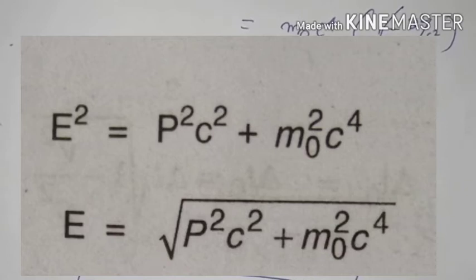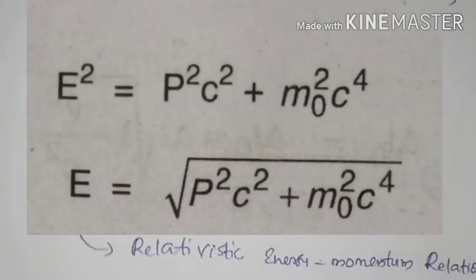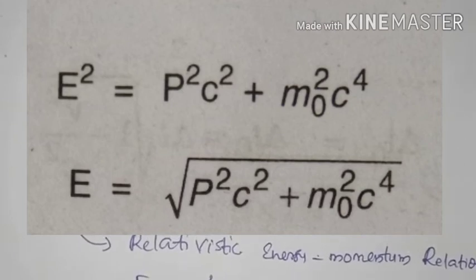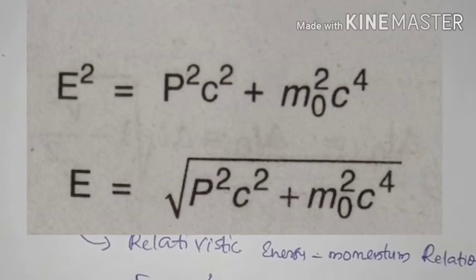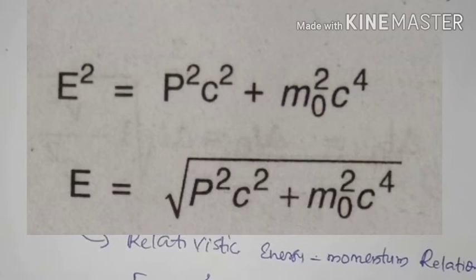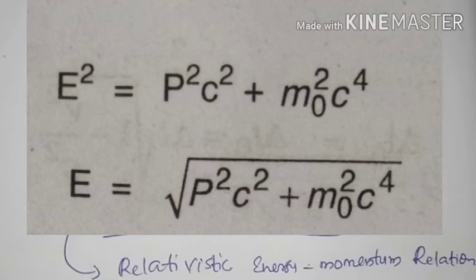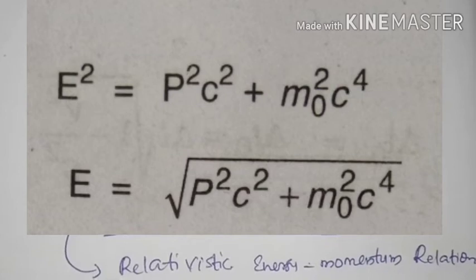This equation is known as the relativistic energy-momentum relation: E equals the square root of (p²c² plus m₀²c⁴), where m₀ is the rest mass of the particle considered.